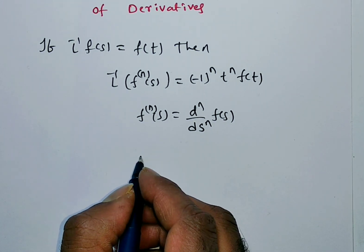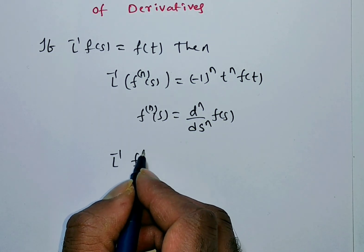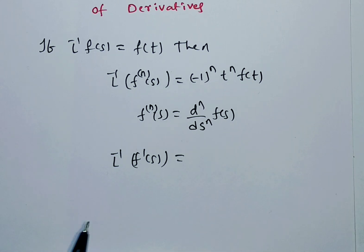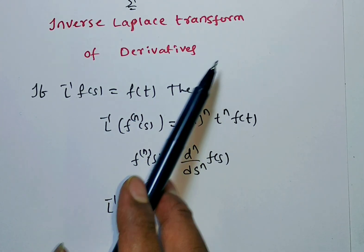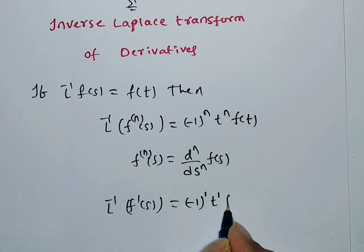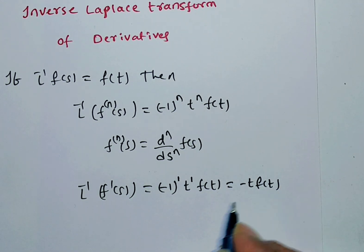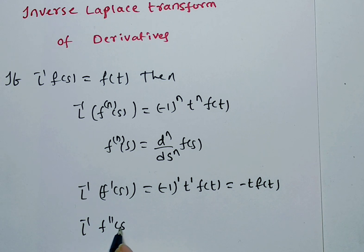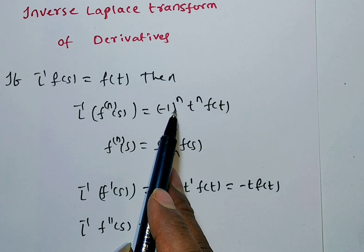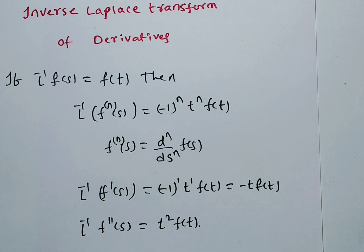F superscript n of S can also be written as d to the power n by dS to the power n of F of S. So if you have F dash of S, L inverse of F dash of S is minus 1 to the power 1, times T to the power 1, into F of T — that is minus T into F of T. And L inverse of F double dash of S equals minus 1 squared times T squared into F of T, which is just T squared into F of T.